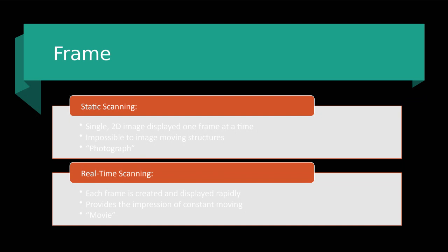We were very similar to CT or MRI, taking one picture at a time and waiting for the next picture to be processed. Now, because of frame rate and how quickly our systems can process things, we see all of those images displayed so rapidly. That's what gives the impression of constant motion — how we can pick up pulsations of the aorta or any type of blood flow happening in a vessel.